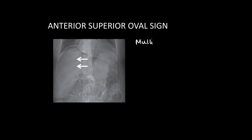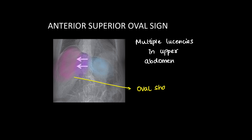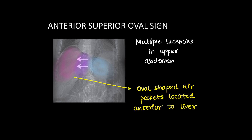Another named sign related to the superior quadrant of the abdomen is the anterior superior oval sign, in which we can see oval pockets of air collecting in the superior quadrants of the abdomen or beneath the diaphragm — oval-shaped air pockets anterior to the liver.